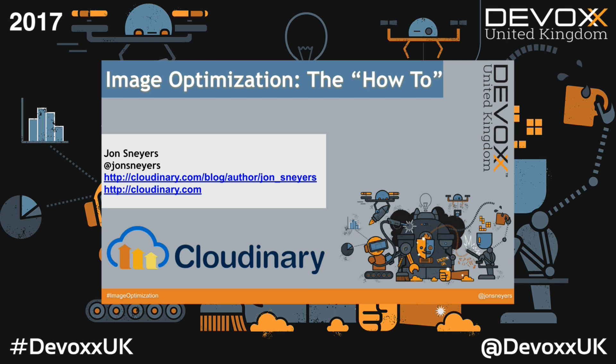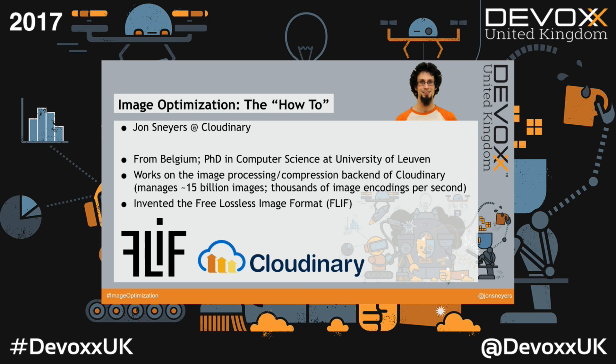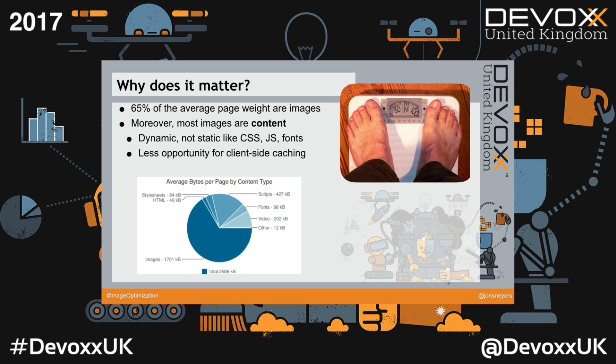Welcome everybody to my quick talk about image optimization and how to do it. I am from Belgium and I work at Cloudinary, which is an image management solution end-to-end. We manage about 15 billion images and do thousands of image encodings per second — we are quite experienced in dealing with images. I am also one of the guys who invented a new image format called the free lossless image format.